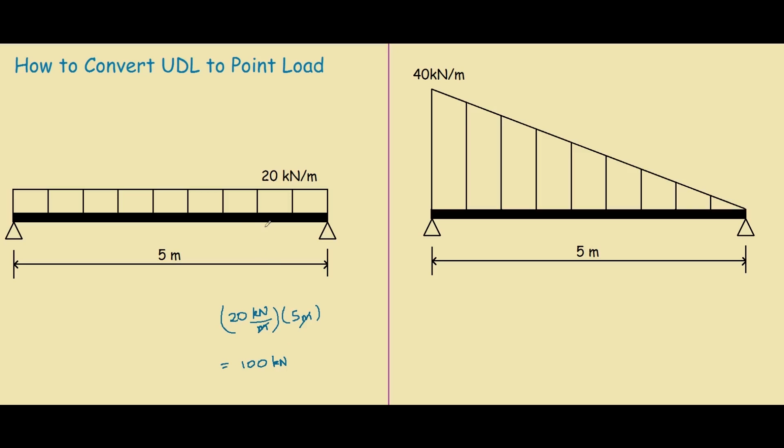To get the point load of a UDL is simply to find the area of this UDL. So the height would be 20 and the length would be 5.